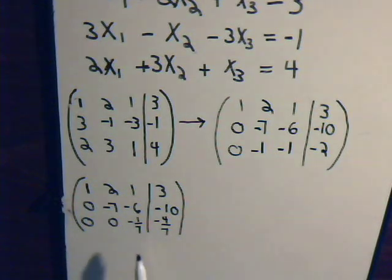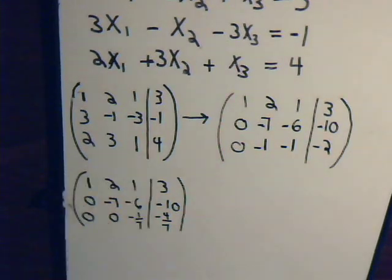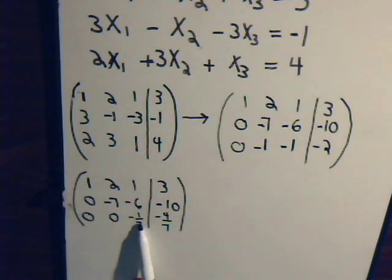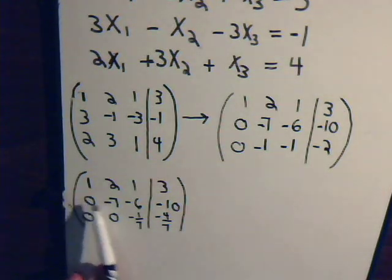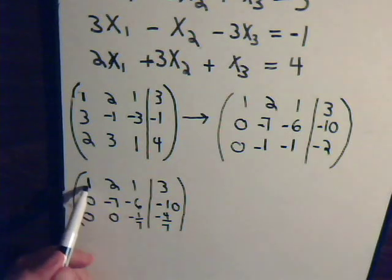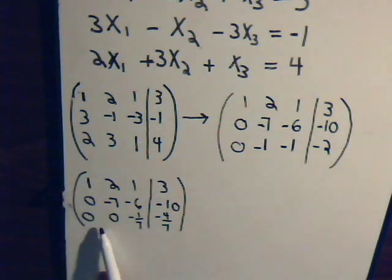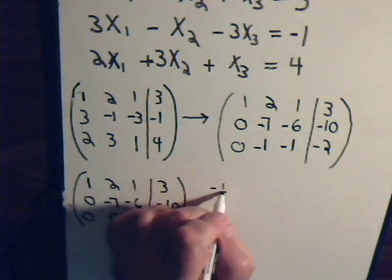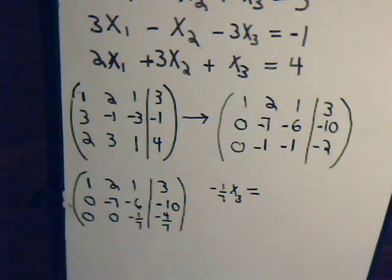The matrix we end up with is row-equivalent to what we began with, meaning the x1, x2, and x3 values that solve this one will also work in the original equations. We now have an upper triangular matrix — the diagonal elements are in place and all numbers beneath the diagonal are zero. This makes it easy to solve. The last row reads: minus 1/7 times x3 equals minus 4/7.